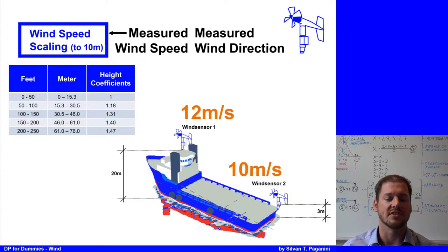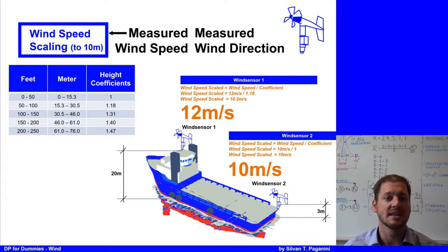A vessel has two wind sensors. Wind sensor number one measures 12 meters per second at 20 meters height while wind sensor number two measures 10 meters per second at 3 meters height. Wind sensor number one has a height coefficient of 1.18, so the measured 12 meters per second divided by 1.18 gives a scaled wind speed of 10.2 meters per second. While wind sensor two has a height coefficient of 1, meaning the scaled wind speed is 10 meters per second.